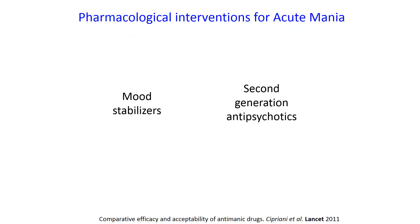For example, Cipriani and colleagues found that mood stabilizers and antipsychotic drugs differ in their efficacy and acceptability when treating bipolar patients. Randomized control trials that compare all treatment options are usually not feasible, so other methodological approaches are needed.